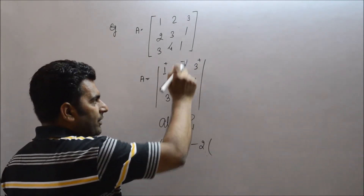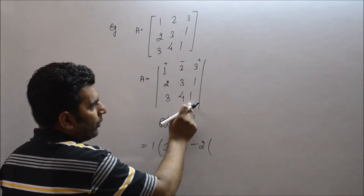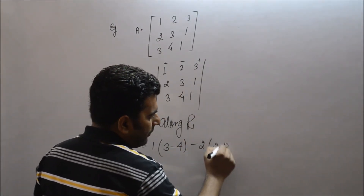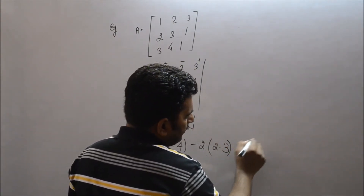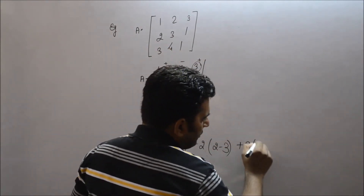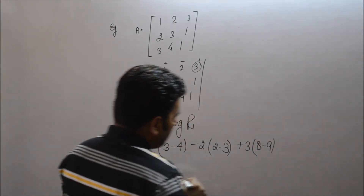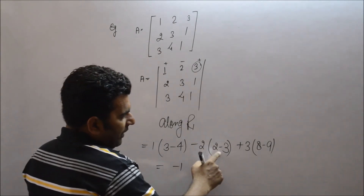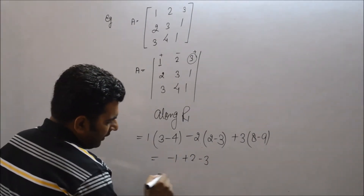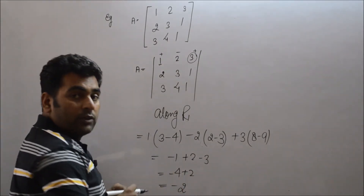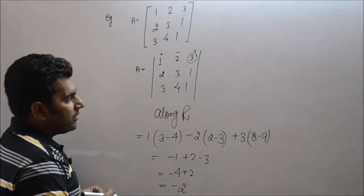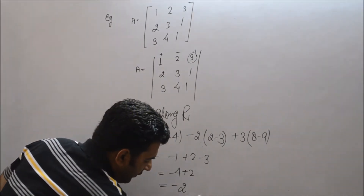Leave the row and column in which 2 is lying. You are left with elements 1, 2, 3, 4, giving 2×(1·2 − 3·1). Then 3 with plus sign — leave its row and column — remaining four elements give 3×(4·8 − 3·9). Calculating: minus 1×1 = minus 1; minus 1×(minus 2) = plus 2; minus 1×(plus 3) = minus 3. So you have minus 3 and minus 1 minus 4 plus 2, which equals minus 2. This is the expansion of the 3×3 determinant along row 1.